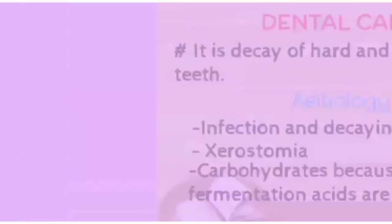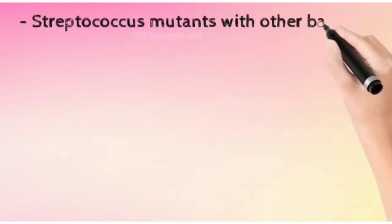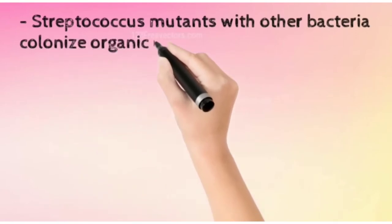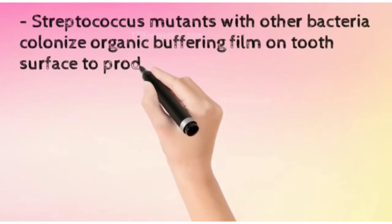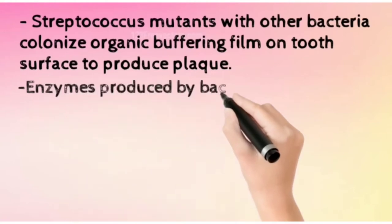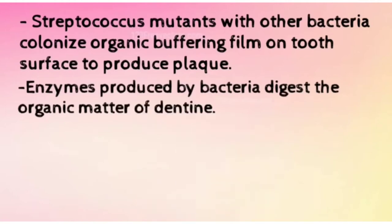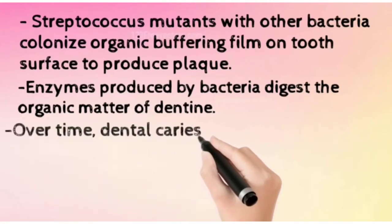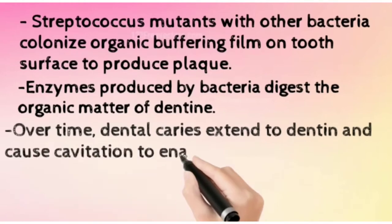Streptococcus mutans with other bacteria colonize the organic buffering film on the tooth surface to produce plaque, so dental plaque is also a factor. Enzymes produced by bacteria digest the organic matter of dentine. Over time, if proper treatment is not taken, dental caries can extend to dentine, cause cavitation to enamel, and then cause acute pulpitis.